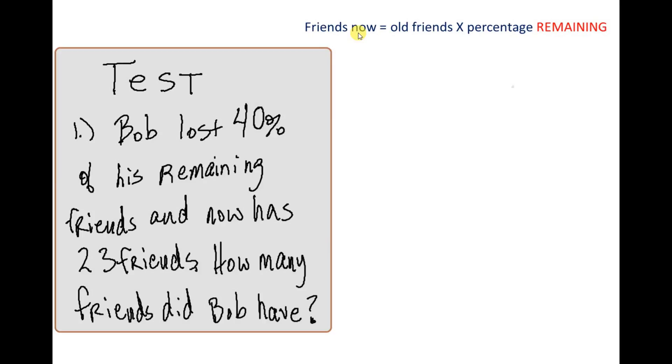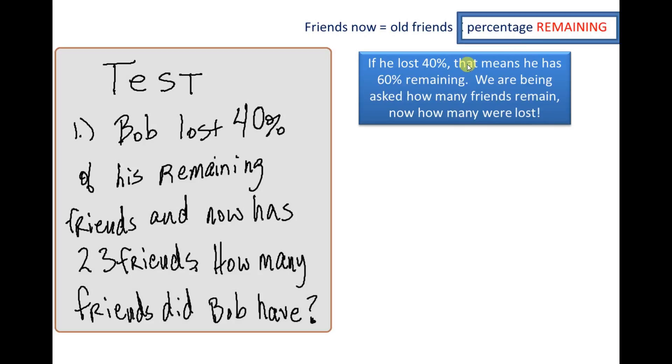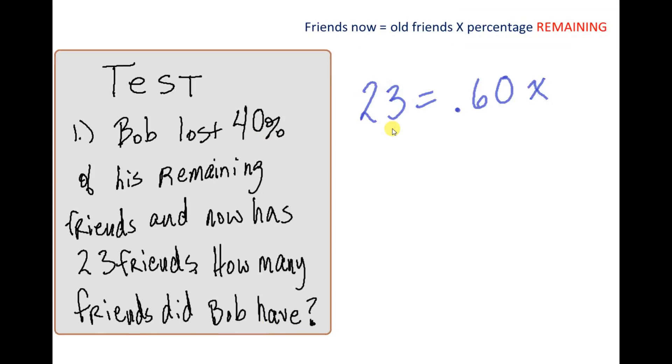The number of friends that he has now, the way we would figure that out is, we'd take the number of friends he had before and multiply it by the percentage that's remaining. Now I put remaining in red here because that's what we're being asked to find out. We're not being asked to find out how many friends he lost, which it tells us is 40%. We're being asked to find out how many remain. The number of old friends is the thing we don't know, and that's what we're being asked to find out. So we're going to use x for that. Now, the percentage remaining is going to be 60%. If you lost 40%, you have 60% left.